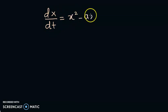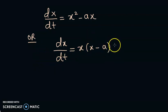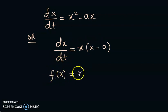Let's consider this system: dx/dt = x(x² - ax), or we can write it as dx/dt = x(x - a). In this case we can analyze the bifurcation of this system by varying the parameter a. So f(x) = x(x - a), and since f is depending on the parameter a, we write f_a(x) = x(x - a).